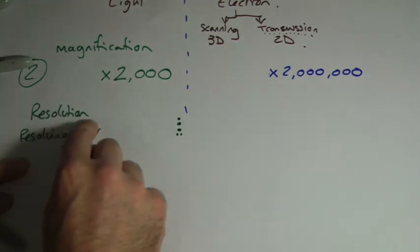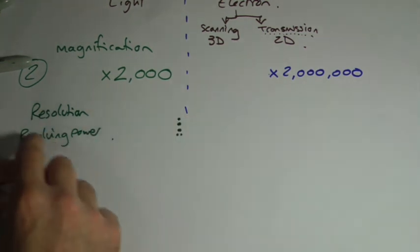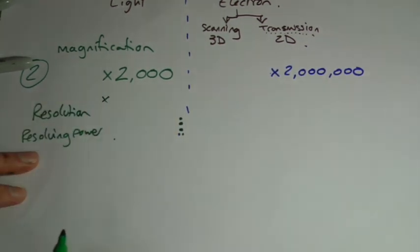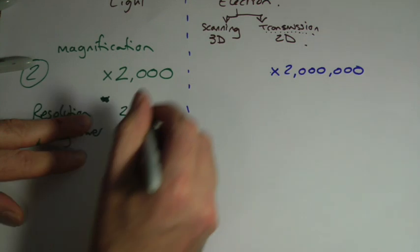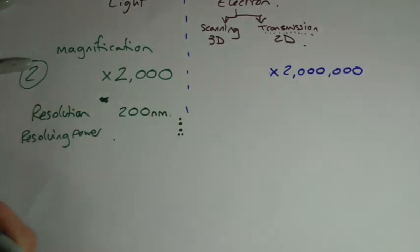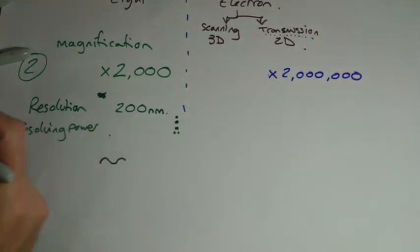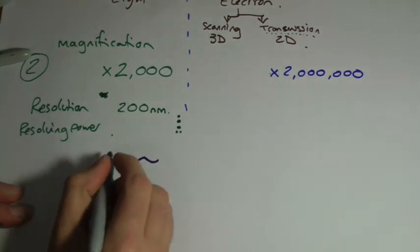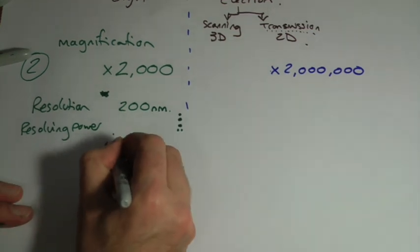So resolution is the ability to see that two dots are separate, or two points are separate. And the resolving power, the resolution of a light microscope, the resolution is 200 nanometers. Now that number is actually fixed by the wavelength of light. When you get down to these shorter wavelengths of light, which are in the violet part of the spectrum, this sort of crosses over to physics. The distance between the wavelength of violet colored light is about 400 nanometers.